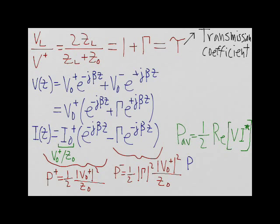Finally, we can also find the power that is dissipated in the load. This is equal to P+ minus P-, the forward power minus the reflected power. That equals one-half multiplied by the magnitude of V0+ squared divided by Z0 multiplied by 1 minus the magnitude of gamma squared.